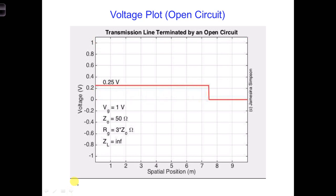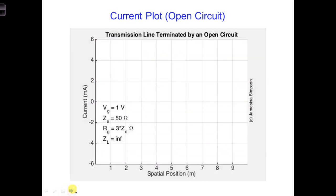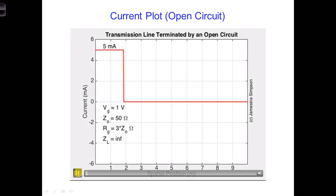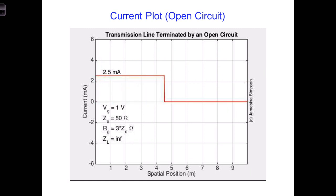Here is a movie created from the same computer code, but this one plots the current. You'll notice a different behavior of the current, and this is because it has a different reflection coefficient at the load and at the generator.